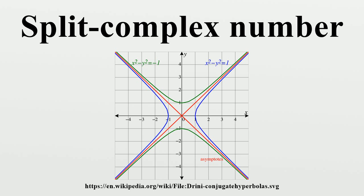If a split complex number z does not lie on one of the diagonals, then z has a polar decomposition z = re^(jθ).